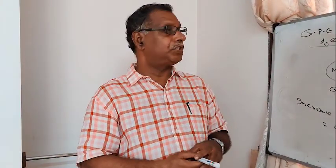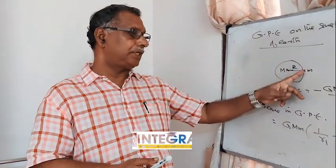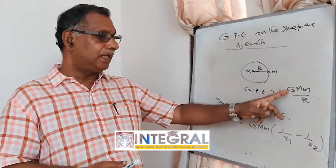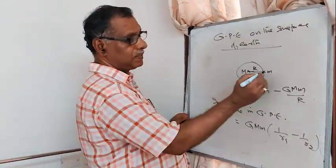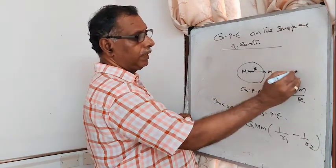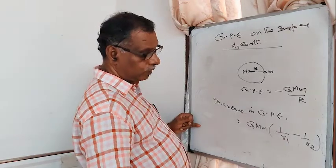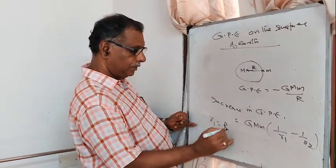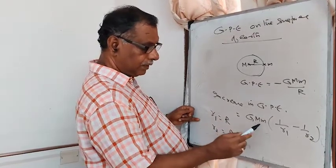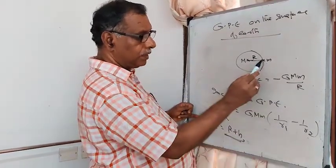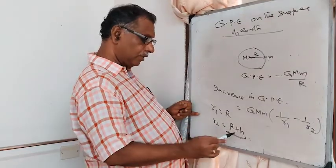The gravitational potential energy of a mass m on the surface of the earth is −G·M·m / R. When mass m is taken from the surface to a height H, the increase in gravitational potential energy is G·M·m·(1/R₁ − 1/R₂), where R₁ = R (earth's radius) and R₂ = R + H.